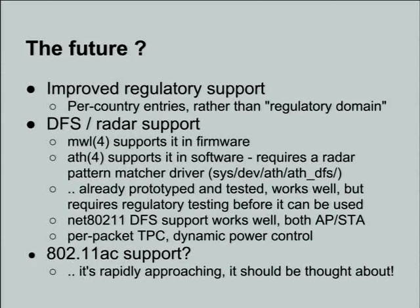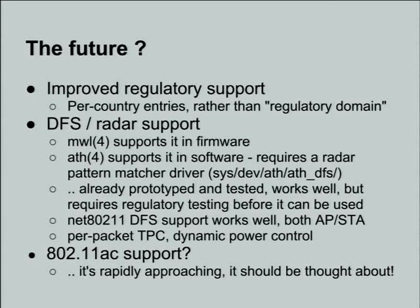We need DFS and radar support in order to actually work as an access point in five gigahertz. At the moment people will just configure a DFS channel without having radar support, and I've seen people do this by hacking the regulatory domain database to get access to DFS frequencies. This is a no-no. We've had issues at work where commercial customers go into firmware and select debug mode to change the country code and disable radar - plenty of network equipment vendors do this, but the FCC and various European regulatory bodies don't allow it. So all the BSD projects need to get their act together over this.